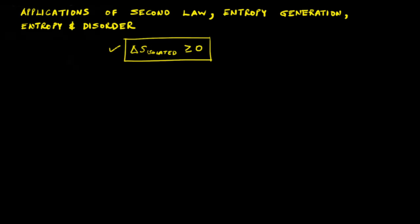We cannot wait to examine all conceivable processes before we can generalize. So till now, no prediction based on this equation has been wrong, and hence we treat it as a law of nature. Therefore, hereafter, to analyze any process, we may start our analysis solely based on this equation rather than any intermediate result such as the Clausius inequality. The Clausius inequality may now be considered as the consequence of this more general statement introduced by the second law.